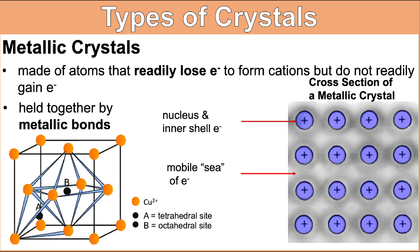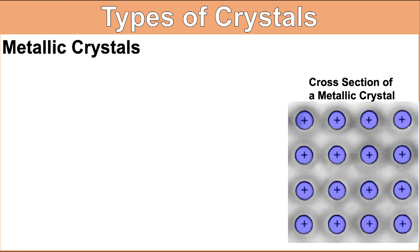This figure shows the unit cell of copper. At the lattice point, you can see a metal atom. As we discussed in our previous video, this is a face-centered cube. This model is able to explain many physical properties of metals, such as their high melting points, malleability, ductility, and more.